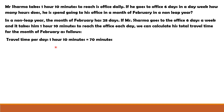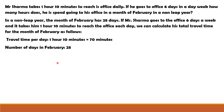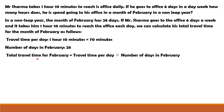The number of days in February are 28. We need to find the total travel time for February. To find that, we have to multiply travel time per day by the number of days in February — that is, 70 minutes multiplied by 28 days. Travel time for February equals travel time per day multiplied by number of days in February.